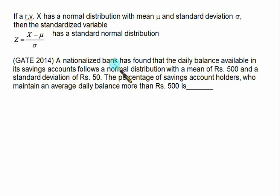In this question a nationalized bank has found that daily balance available in its saving account follows a normal distribution with a mean of 500. The mean value is given as 500, so we have the value of mu equal to 500 with a standard deviation of Rs 50.